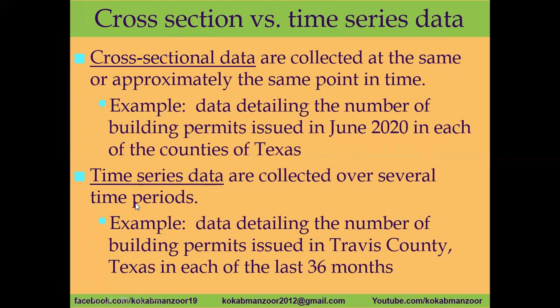But when we collect data over a period of time — over months or years — it is called time series. For example, data on the number of building permits issued in Travis County, Texas in each of the last 36 months. In the first month there might be 10 permits, then 12, then 15, 16, 18 — each month we are collecting data. That is over a period of time. Cross-section means one point in time; time series means over a period — five months, 10 months, 5 years, 20 years, 30 years.